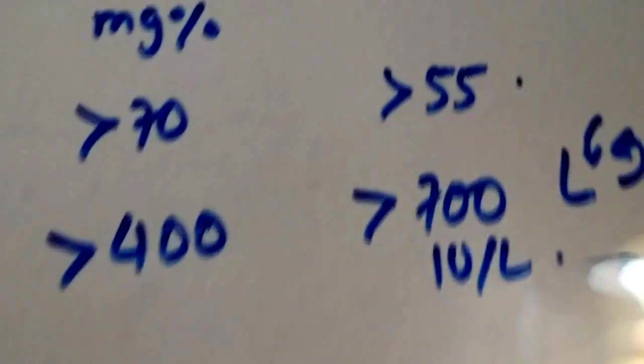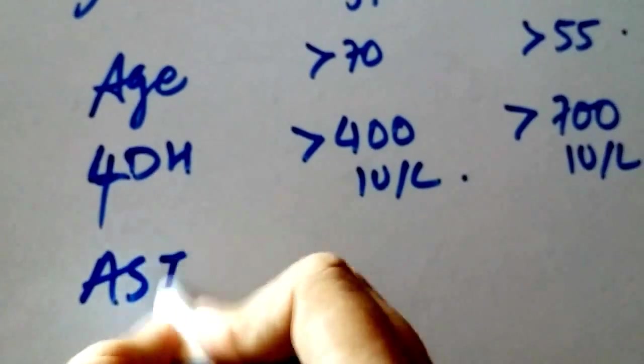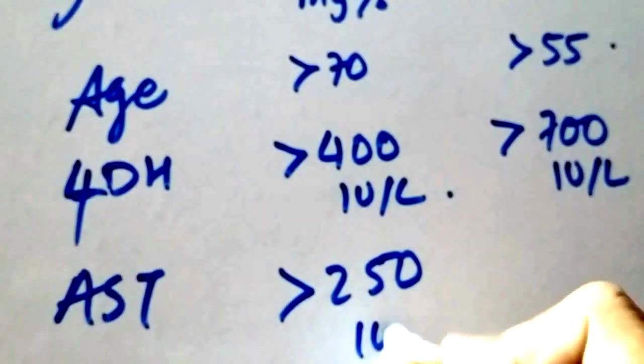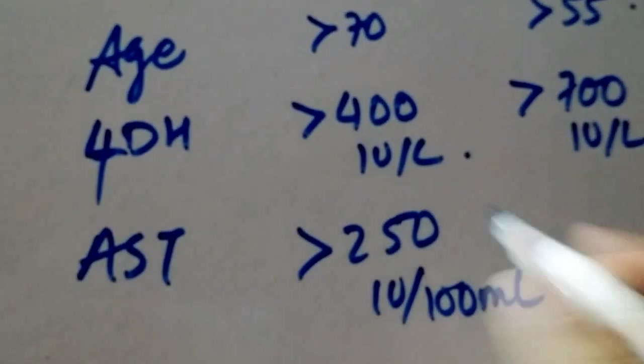It's international units per liter. The other A is for AST.